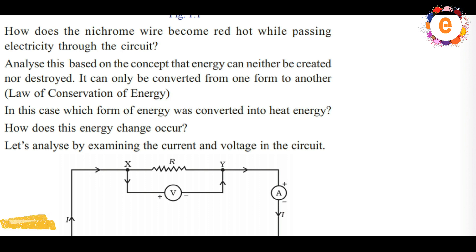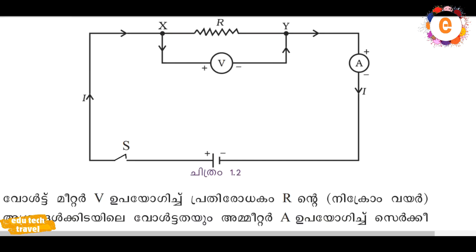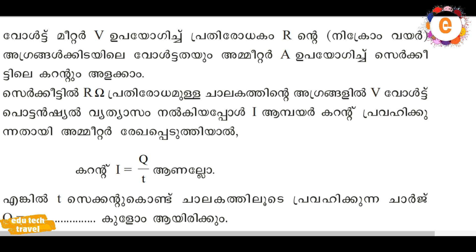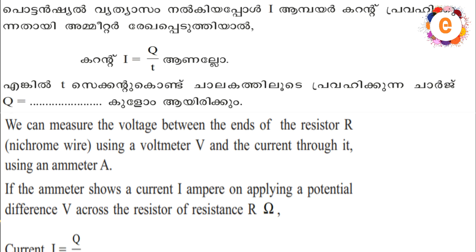In this case, we can measure the voltage between the ends of the resistor using a voltmeter V, and the current through it using an ammeter A. Then current I is equal to Q by T.